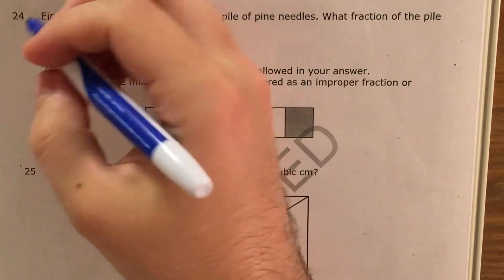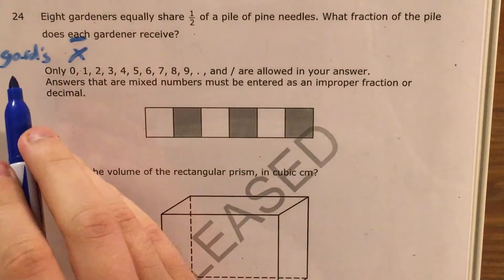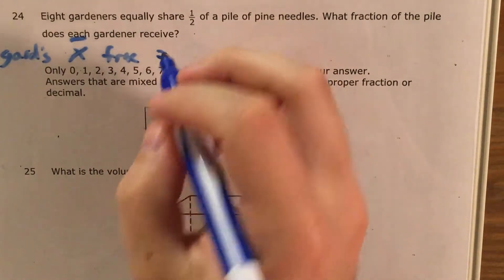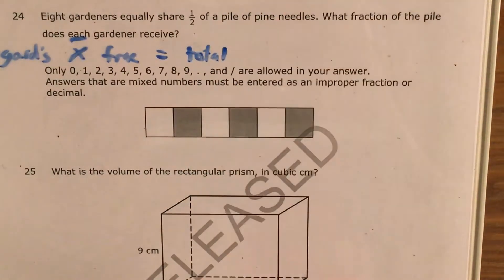Specifically, I'm going to have to multiply the gardeners by the fraction of the pile that they each receive, and that's going to give me the total amount of pine needles that they're all splitting up.